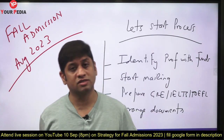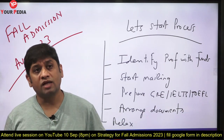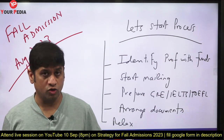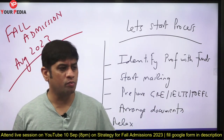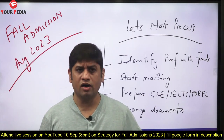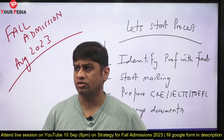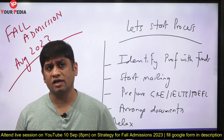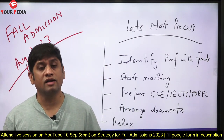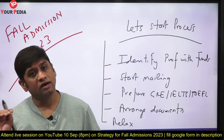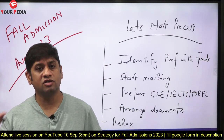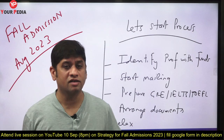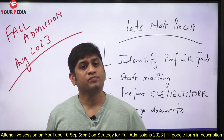Then start preparing for GRE — IELTS as well. It will take about three months. After that, arrange all required documents: SOPs, LORs, transcripts. Arrange everything that is required, and then relax. The last step is to chill out — and you will get the admissions.